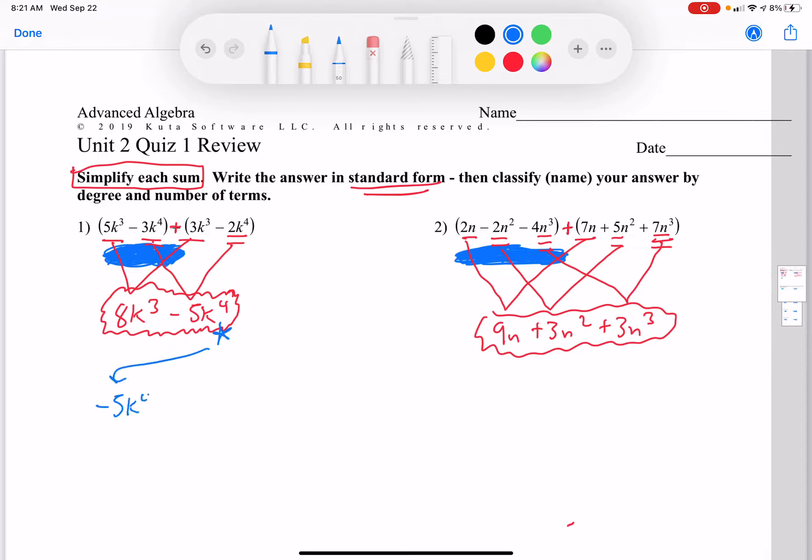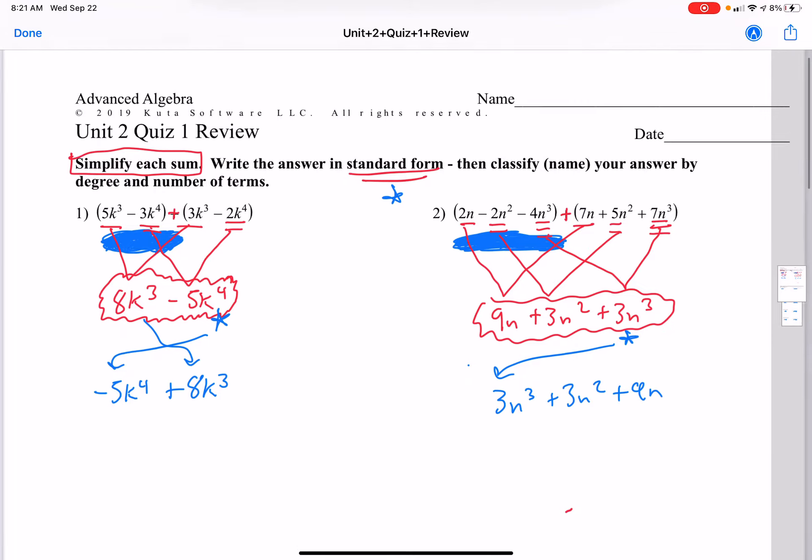Negative 5k to the 4th plus 8k cubed. I'm going to quit circling my answer because we've got a lot more to do with this. We're going to put it in standard form again, which means we're going to put the biggest exponent first. So that needs to be 3n cubed plus 3n squared plus 9n.